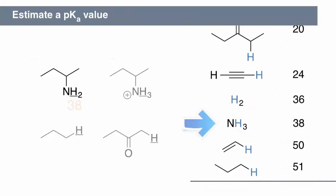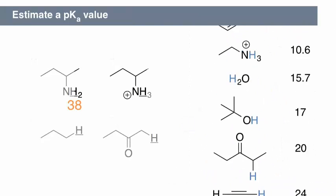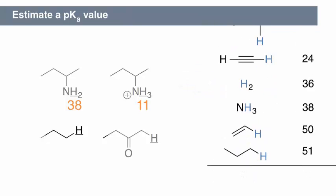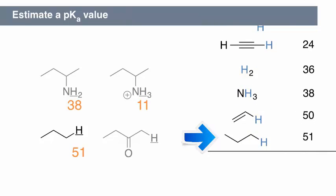The amine's pKa value is approximately 38. The ammonium's pKa value is approximately 11. And alkyl protons have pKa values of approximately 50.